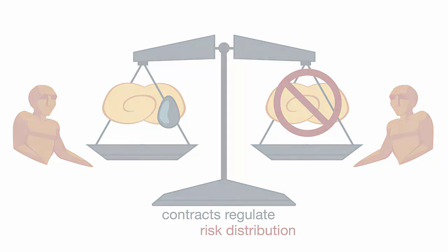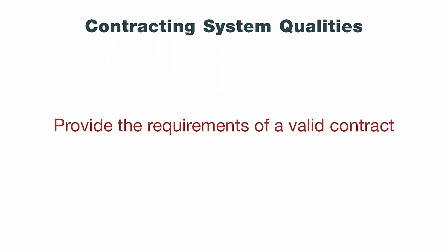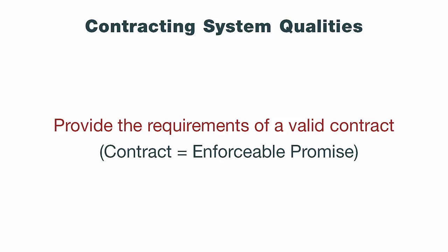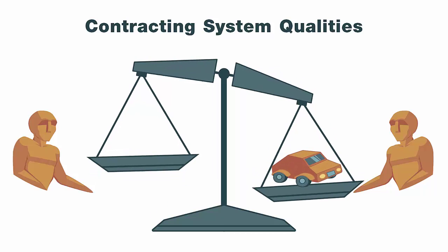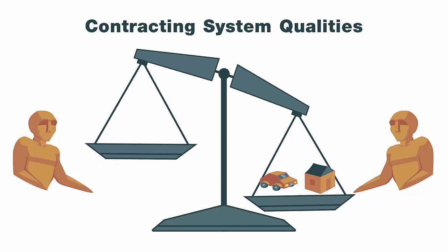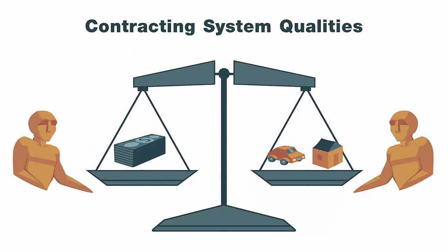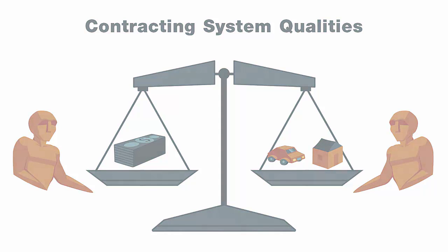A contracting system does three things. First, it must provide the requirements of a valid contract. A contract is formed in any transaction in which one or both parties make a legally enforceable promise — because that's what a contract is, it's an enforceable promise. This means there are two elements to a contract: there is a promise in which one party promises to do something — purchase a car, build a house — and then there's another exchange for that promise, such as a promise to pay. So contracts are the types of promises that the law will enforce.